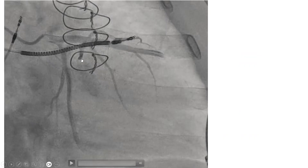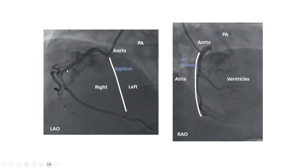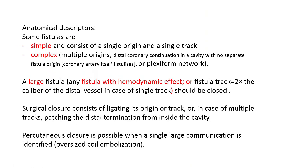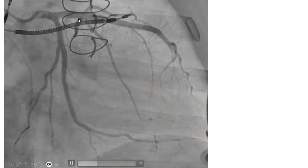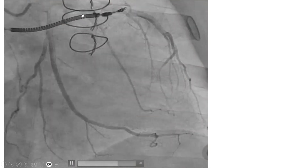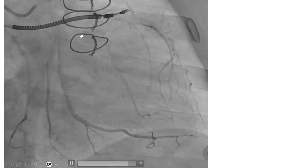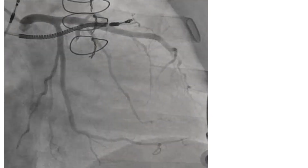A simple fistula may be large and may have hemodynamic effect. Another definition of complex fistula is one wherein the main artery itself terminates in the cavity — for example, the RCA gives a PDA and the PDA itself continues into the cavity with no separate distinct fistula track. That's also called a complex fistula. Again, a large fistula is a fistula with hemodynamic effect. There is also an anatomical definition for a large simple fistula: when the fistula track is equal to two times the caliber of the distal vessel.